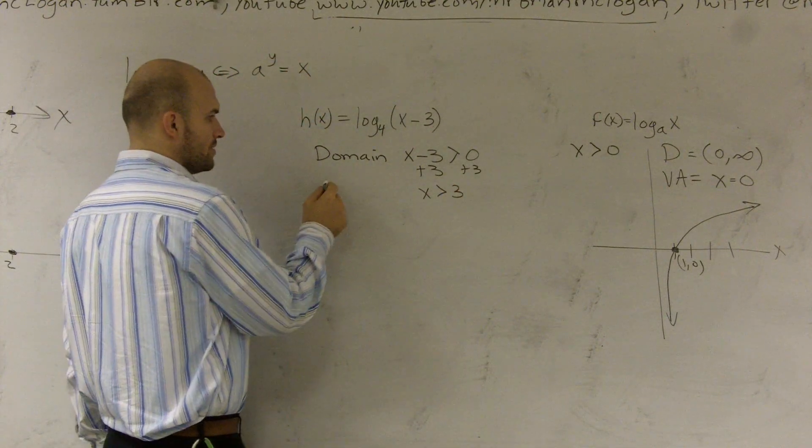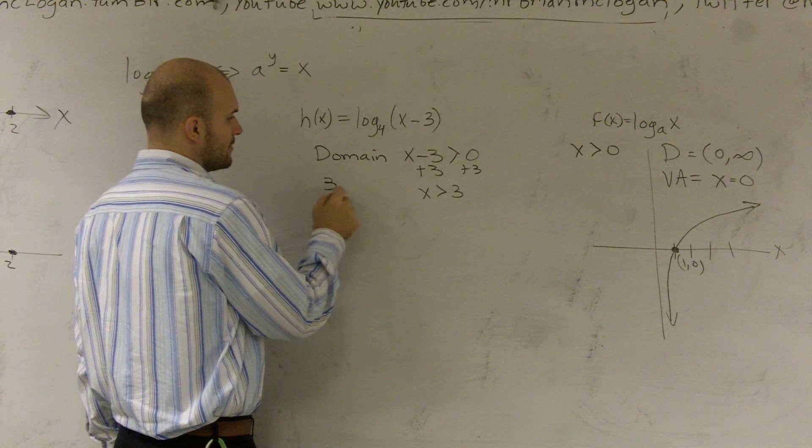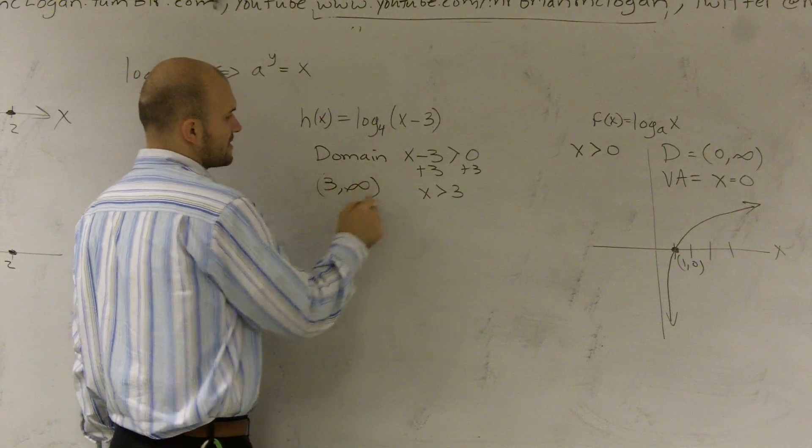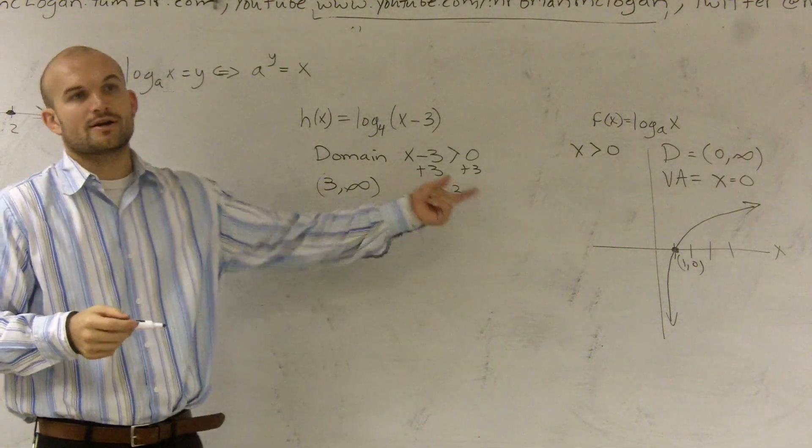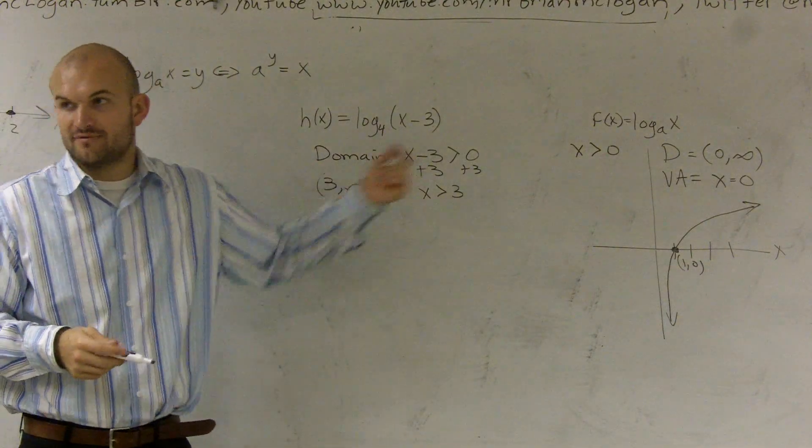And then when I solve for x, I get x is greater than 3. So that is my domain. So my domain will really be from 3 to infinity, because it says all x values that are greater than 3. So the domain is from 3 to infinity.